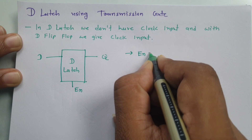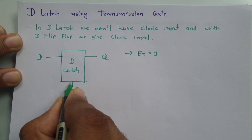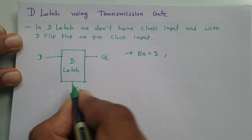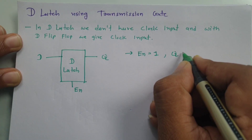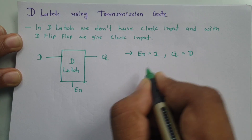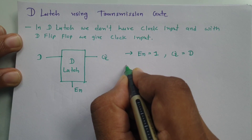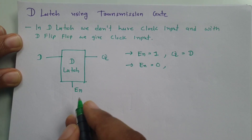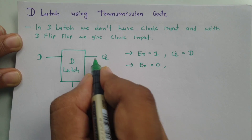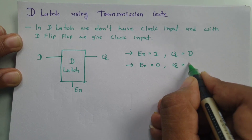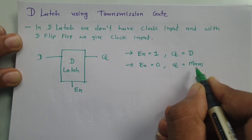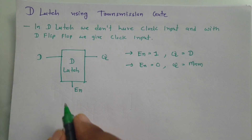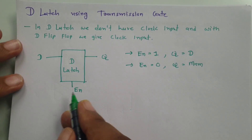If enable is equals to 1, you see enable is active high. Then output Q will be equals to D. And if enable is equals to 0, in that case output Q will stay in memory mode — it will store previous data. This is how DLH functions.